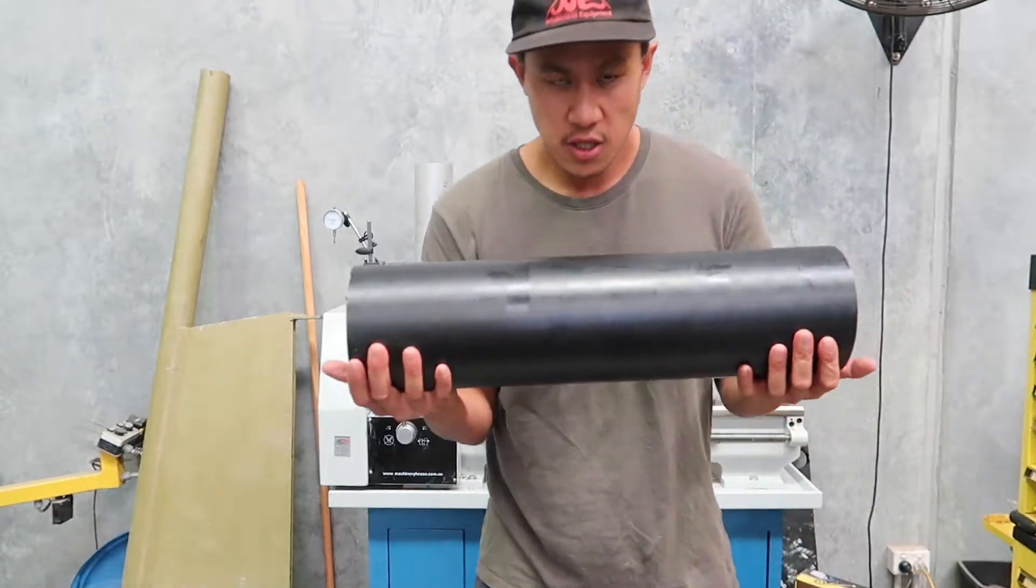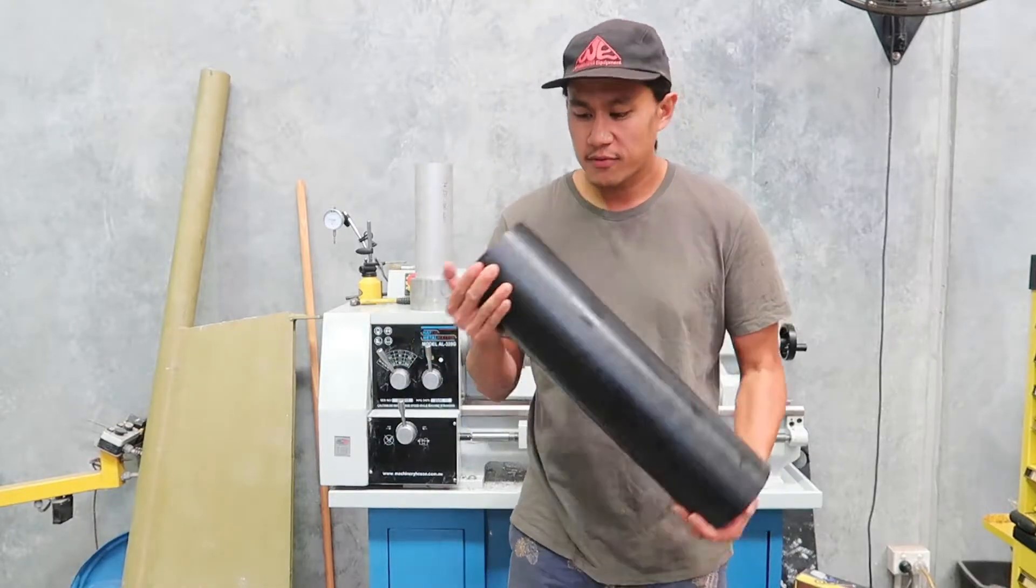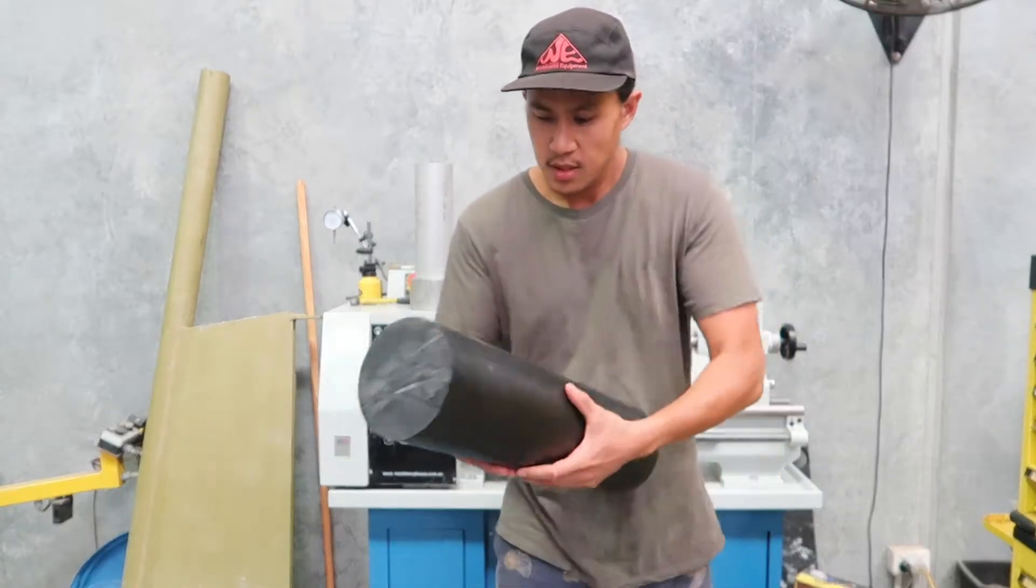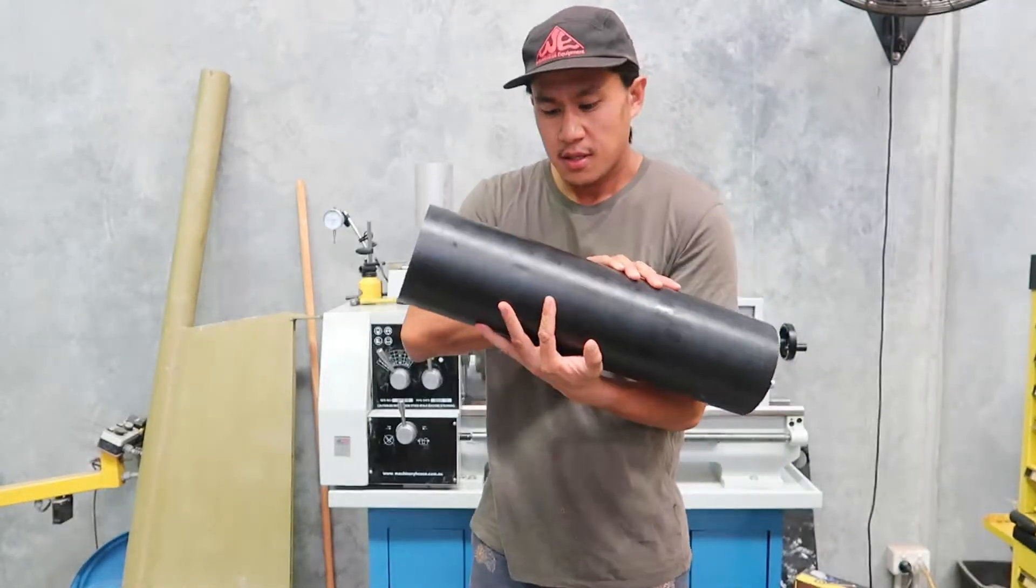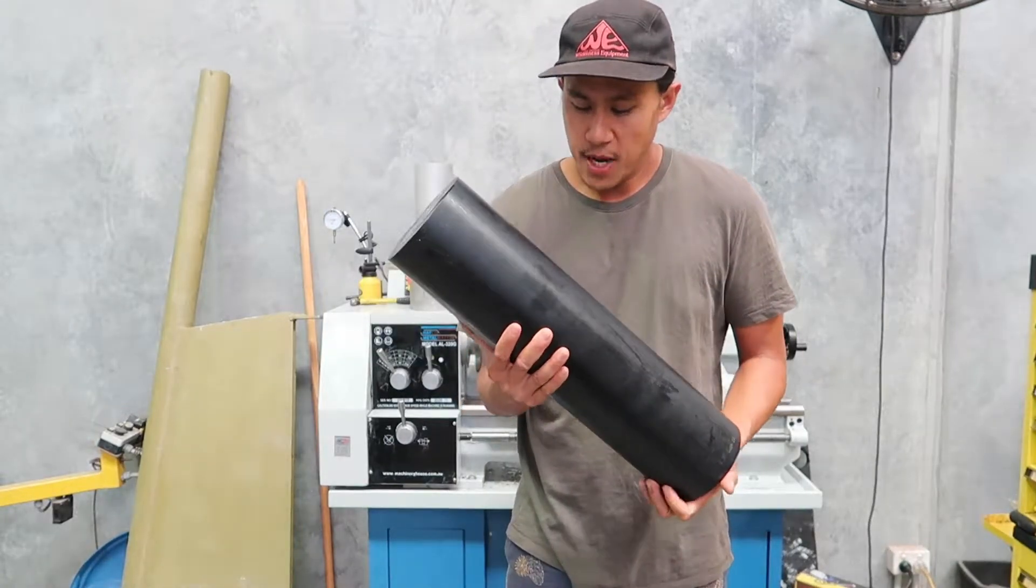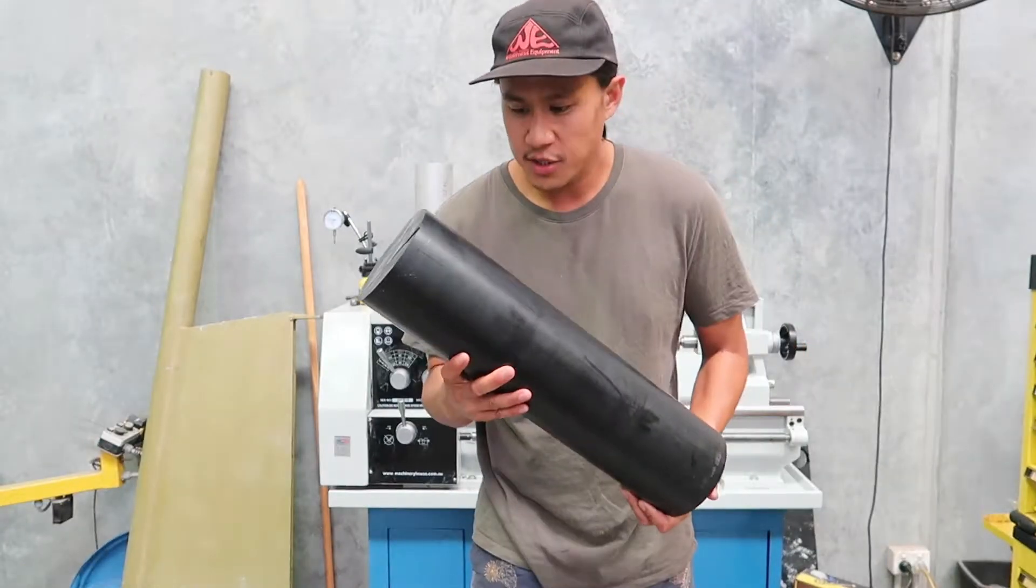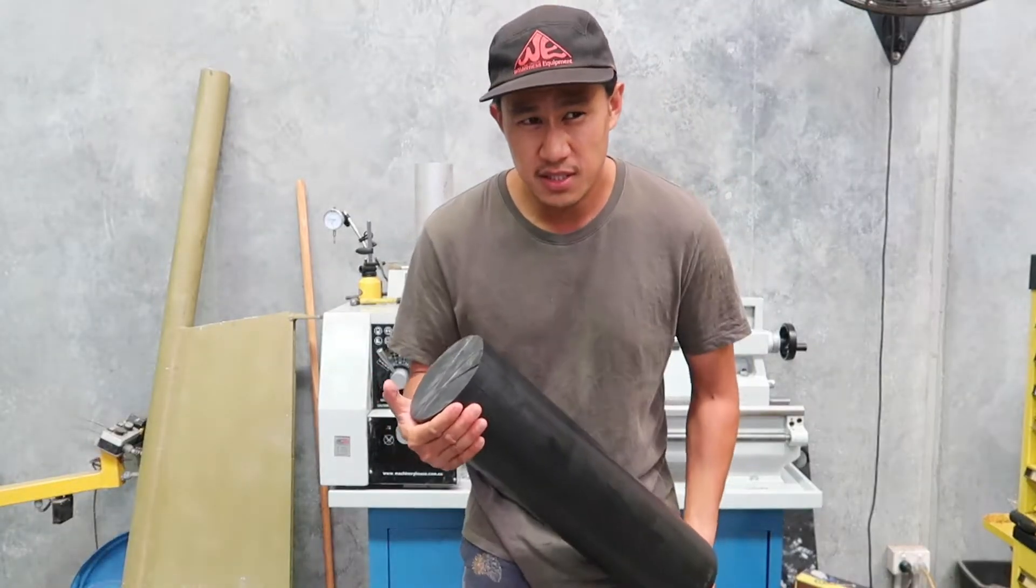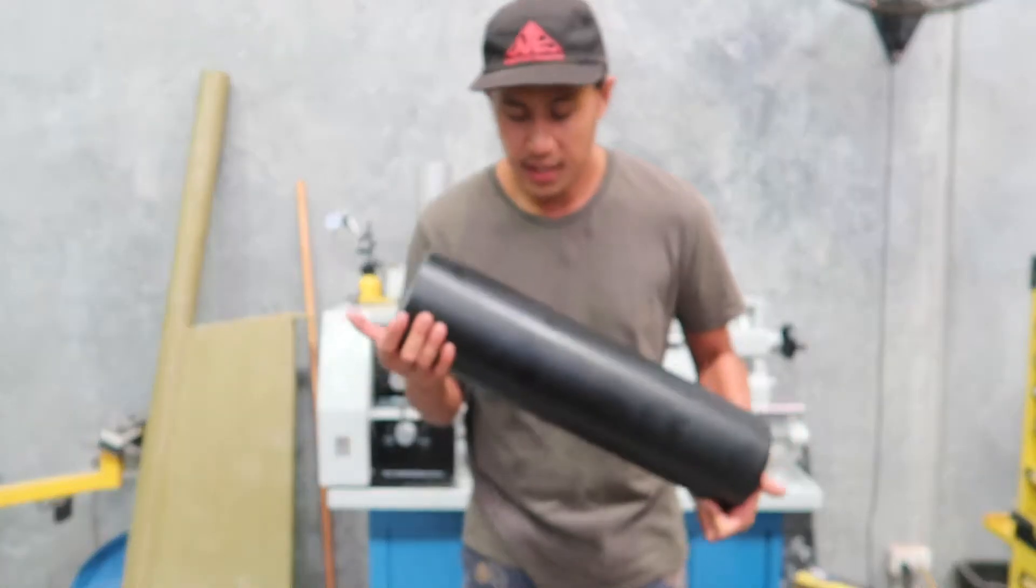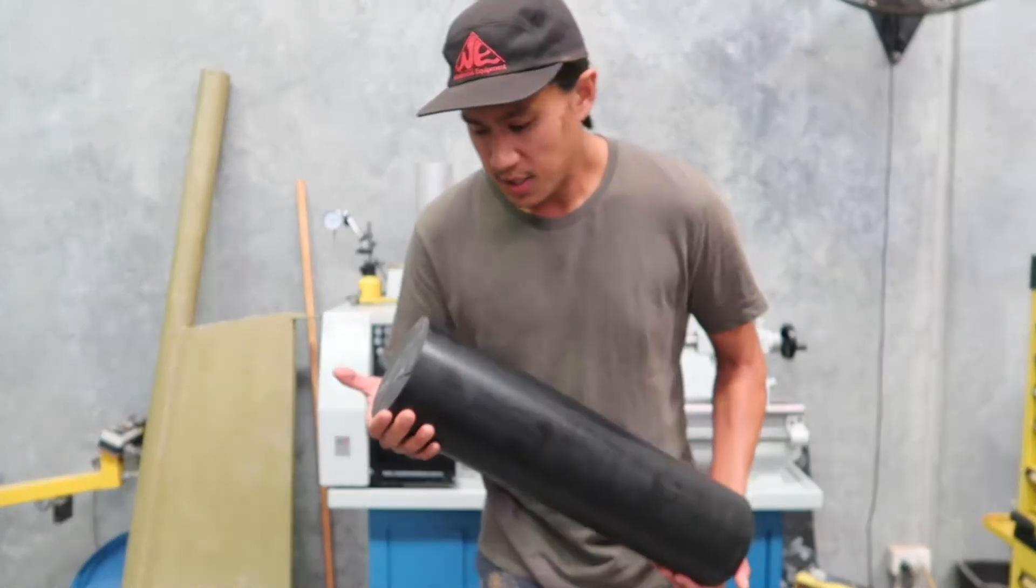This is a UHMW Ultra High Molecular Weight Block Rod. It was about $200. It's pretty common to be used in bearings because it's self-lubricating and it's very wear resistant. A better version of this would be something called Vesconite, which is also a thermoplastic, but it's about four times more expensive. So I've settled with this.